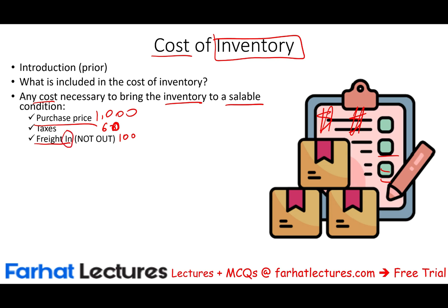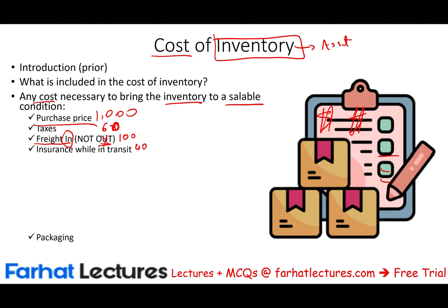Notice the term is freight in, not out — we're going to see freight out somewhere else. Freight out is not part of the inventory cost, because inventory is an asset, and anything included in inventory becomes an asset. Insurance while in transit — let's assume we paid $40 of insurance while in transit because we want to protect this item; it's part of the cost. Let's assume we paid $50 for packaging because this item needed special packaging. So all these costs together — the item costs us $1,250. Although the price of the item itself is $1,000, the total cost is $1,250.